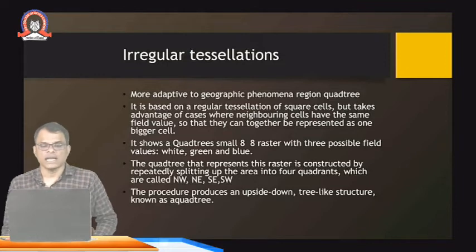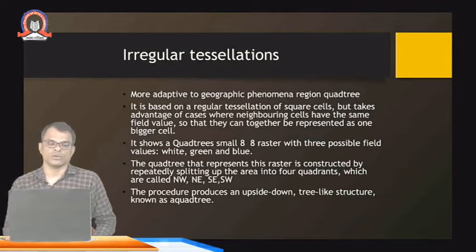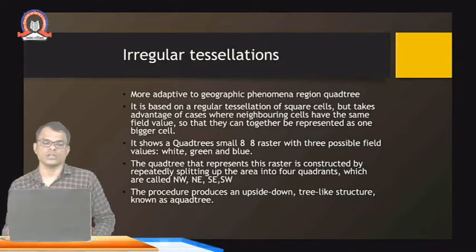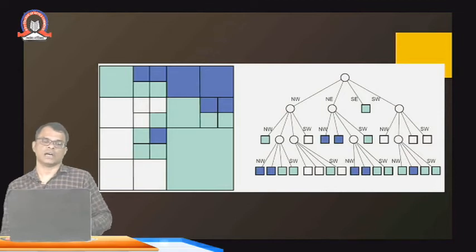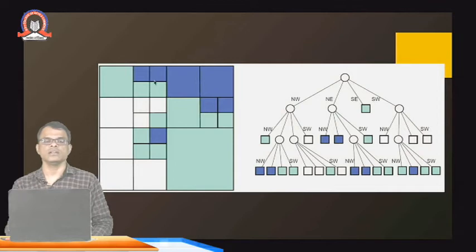The quadtree that represents this raster is constructed by repeatedly splitting the area into four quadrants, which are called NW, NE, SE, and SW. This procedure produces an upside-down tree-like structure known as a quadtree. If you see the white color boxes — in regular tessellation all box sizes are the same. When four cells of the same value come together, they are combined into one big cell — that is irregular tessellation.